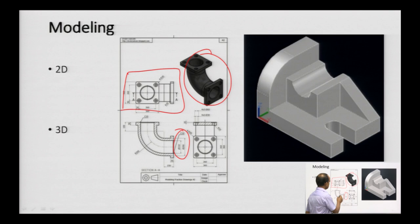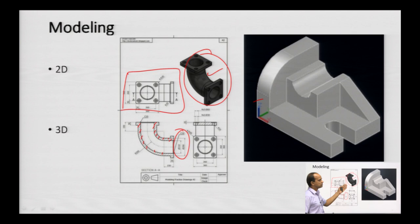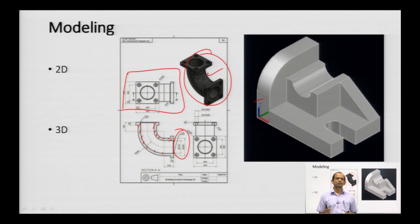The hatching shows that material is present, and by making sections of the solid you can show internal features. The same product can also be shown in 3D. In modeling software, this appears as a true 3D model that you can view from various angles, rotate, manipulate, stretch, or compress — all those possibilities are available.